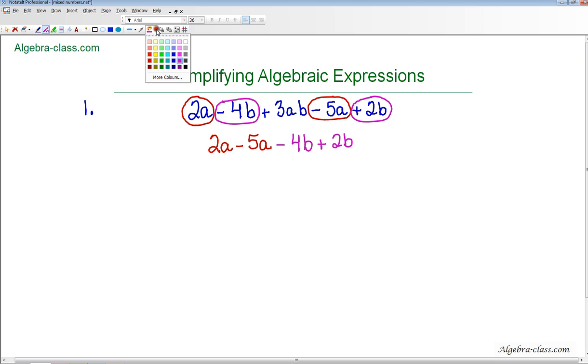And then the last term is the plus 3ab, but because there's no other term that has the variables a and b, it does not have a like term, so I'm just going to add it at the end.